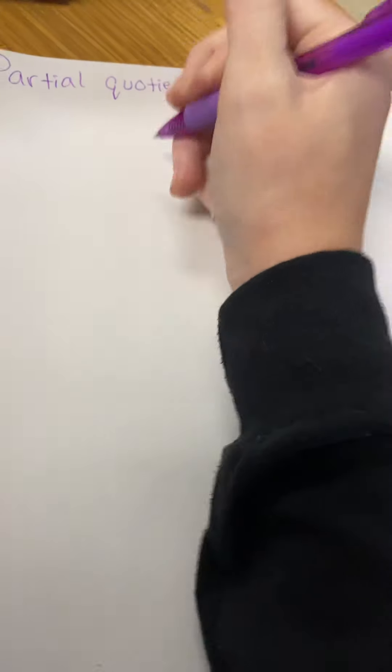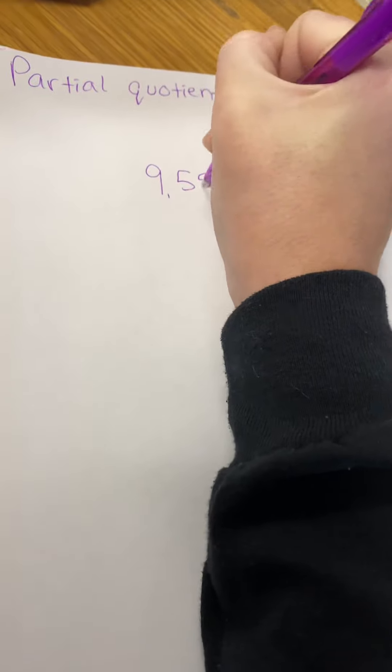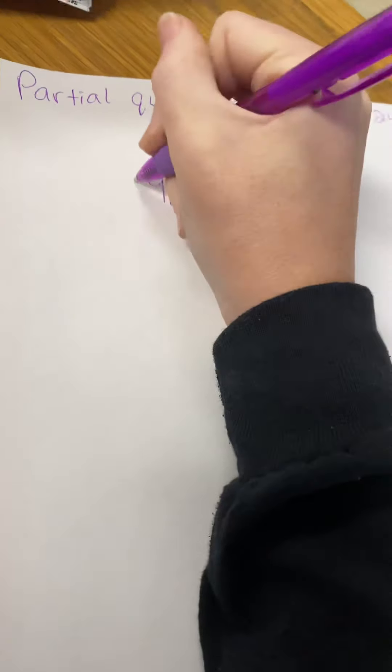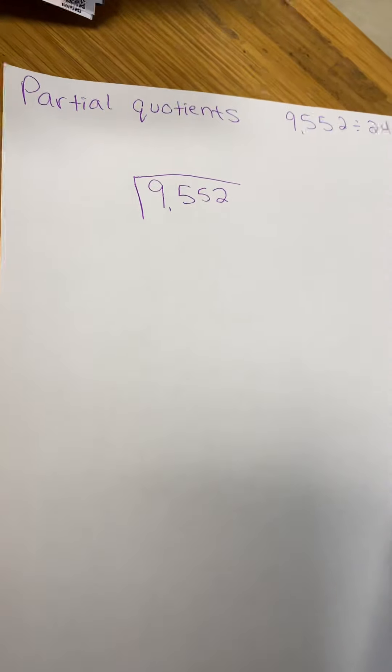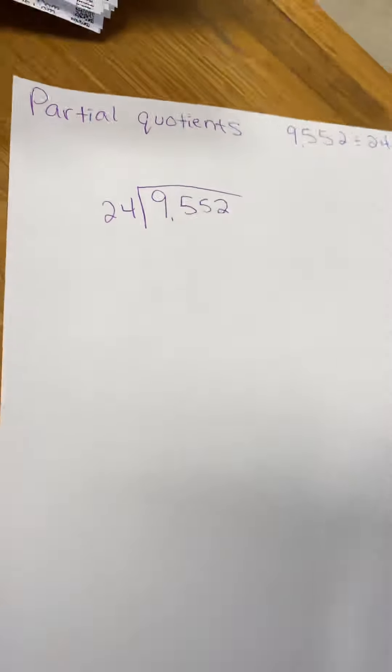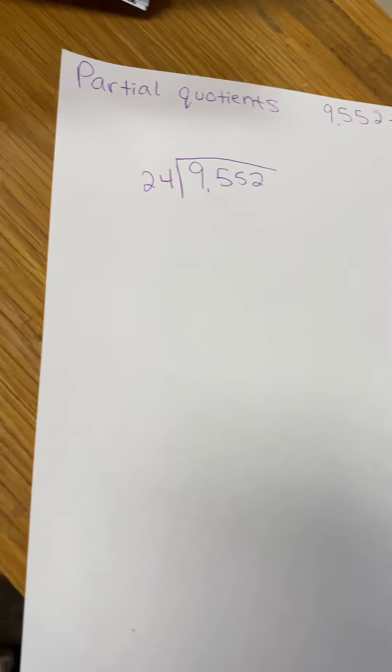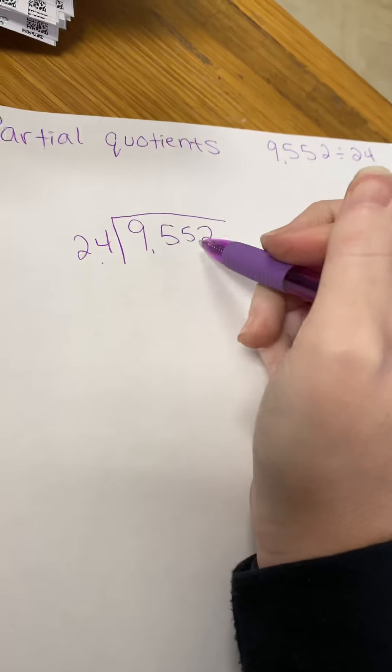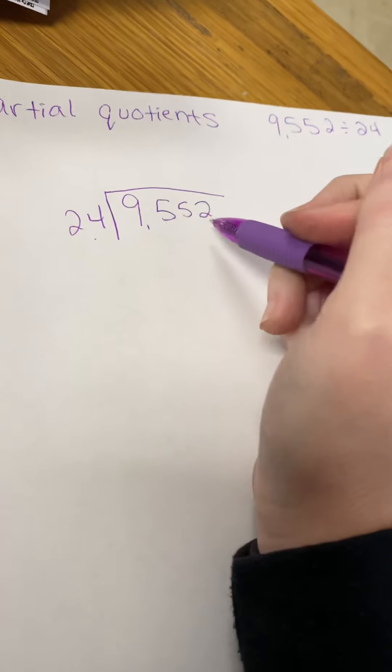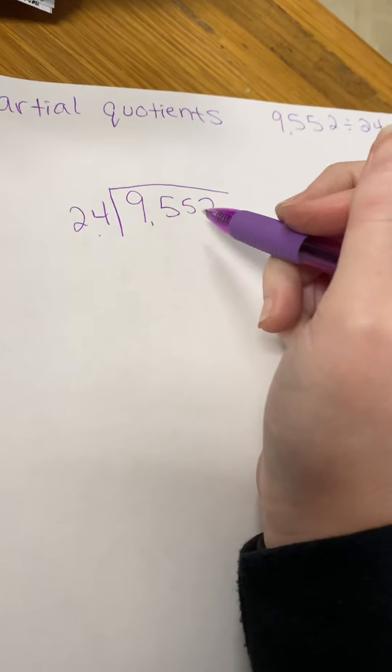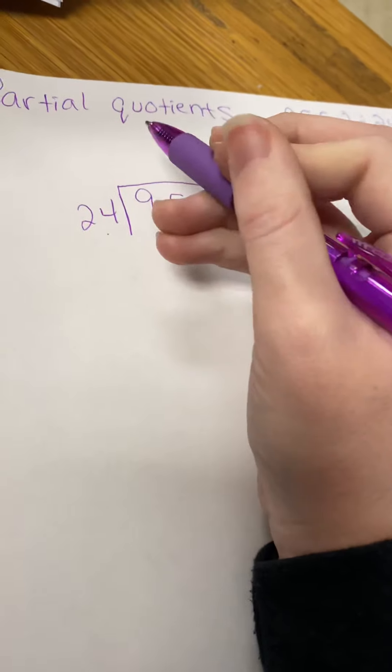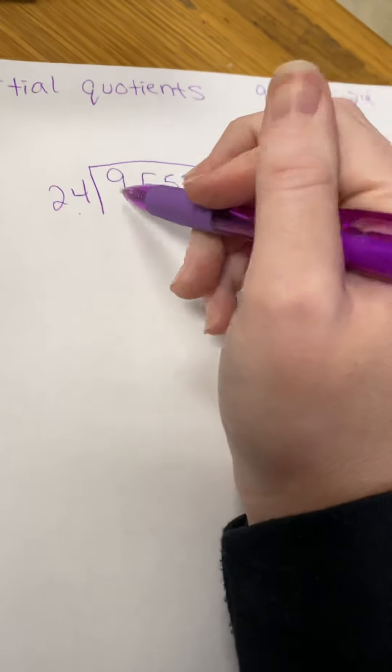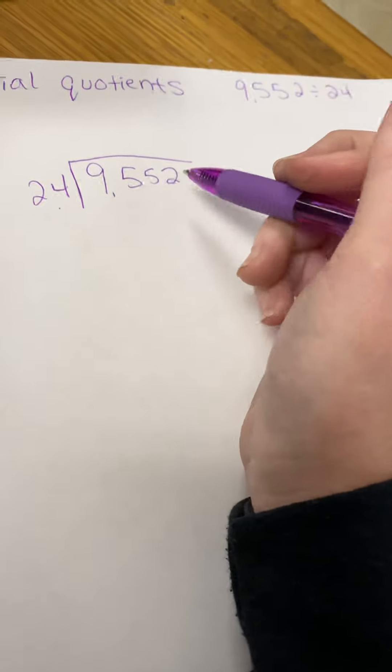To start with, you put your 9,552 as your dividend and your 24 is your divisor. What I tell the kids is they need to find 24 and take it into somewhere close to 9,000 without going over. I say 9,000 because if you just round, you can't round up, you have to stay the same. So 9,000 will be close to 9,552 without going over.